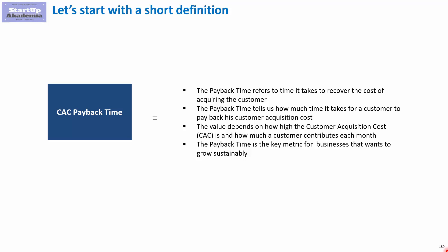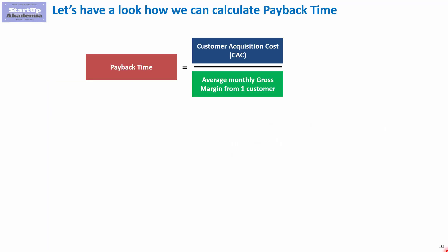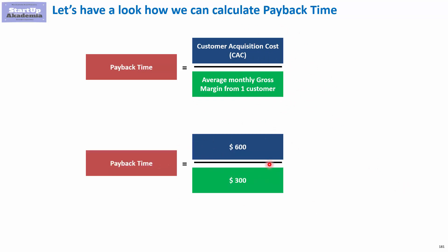That is why startups are so obsessed about getting as much money from investors as possible. Now, how we calculate the payback time — we do it in a very simple manner. We simply divide the customer acquisition cost by the average monthly gross margin generated by this customer. For example, if we spend $600 on customer acquisition and every month the customer generates $300, then we'll get our money back in two months.